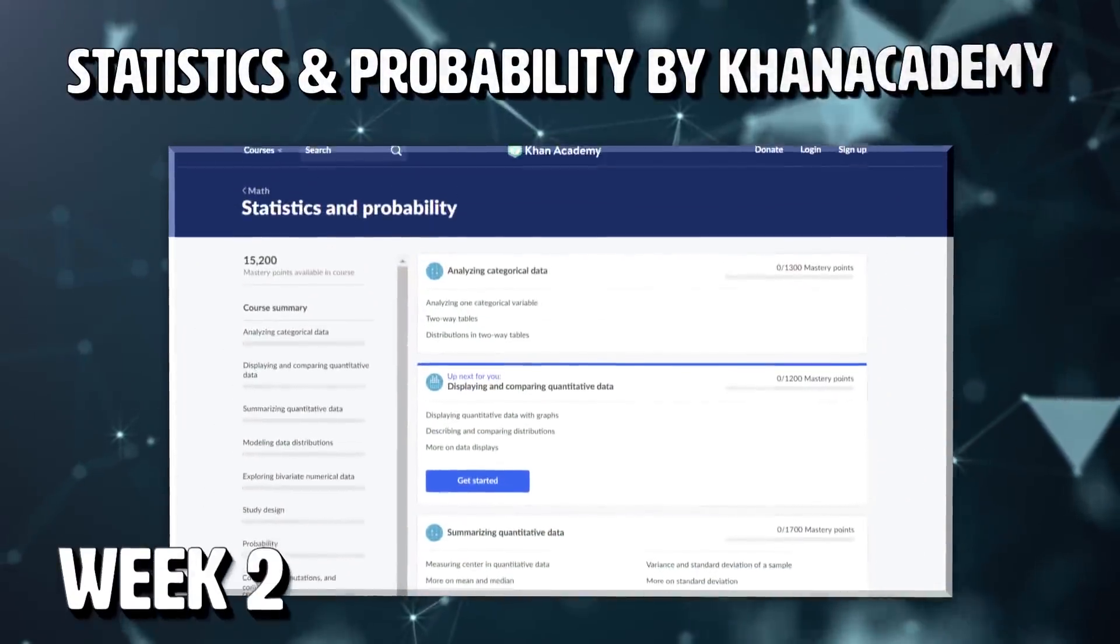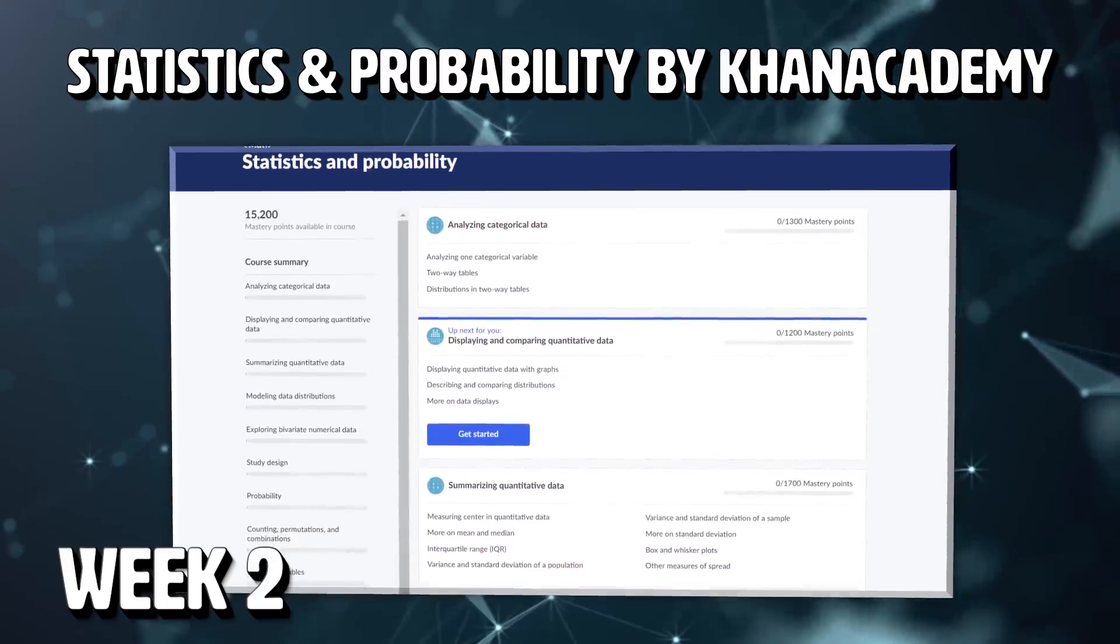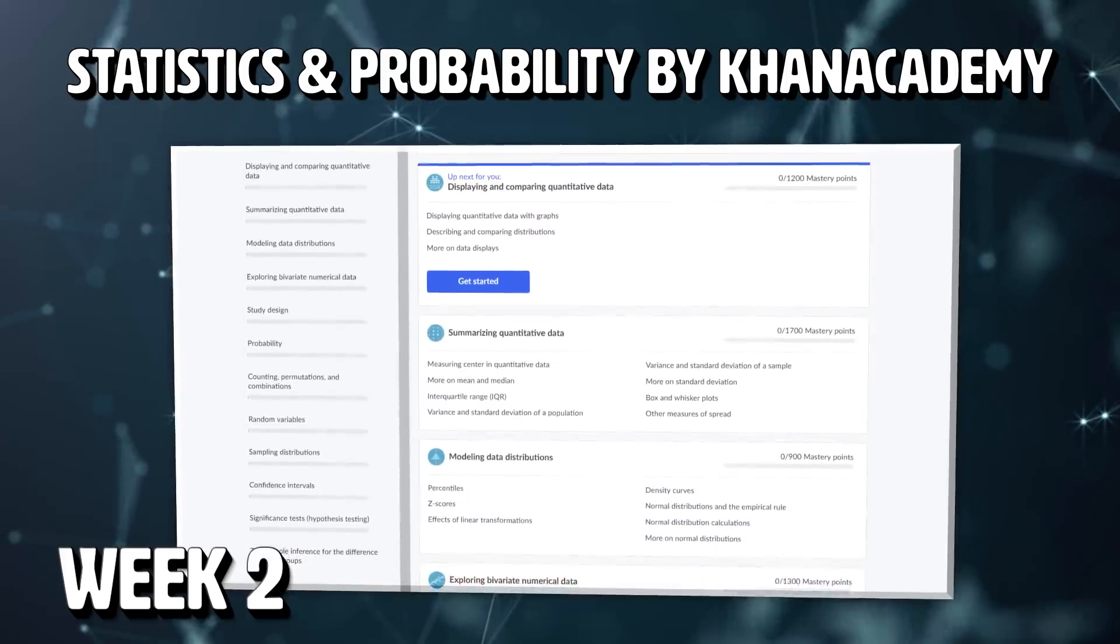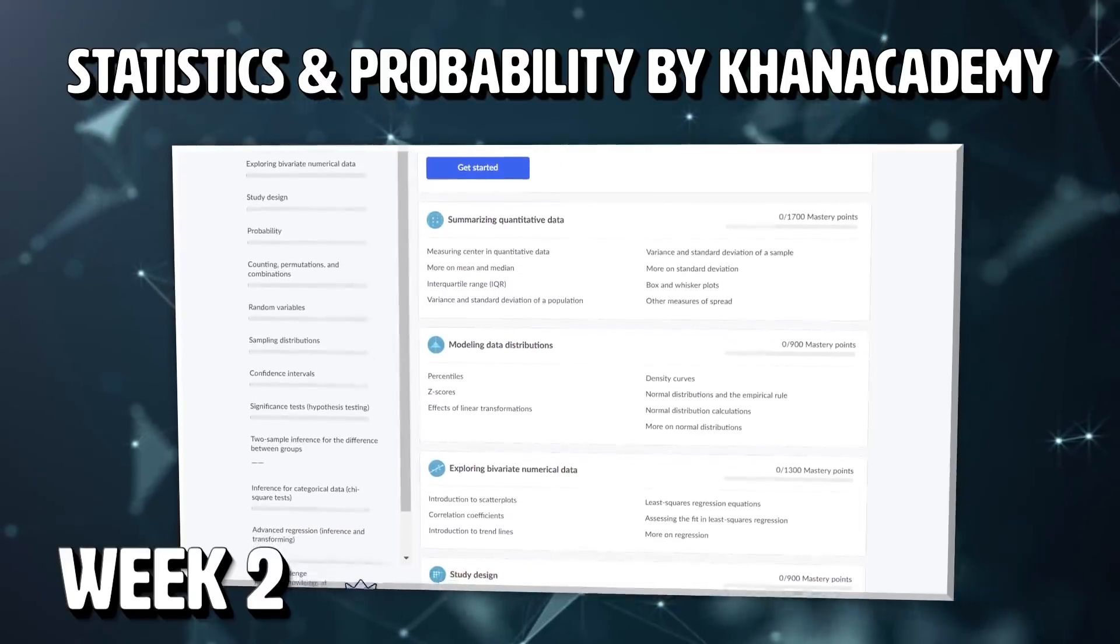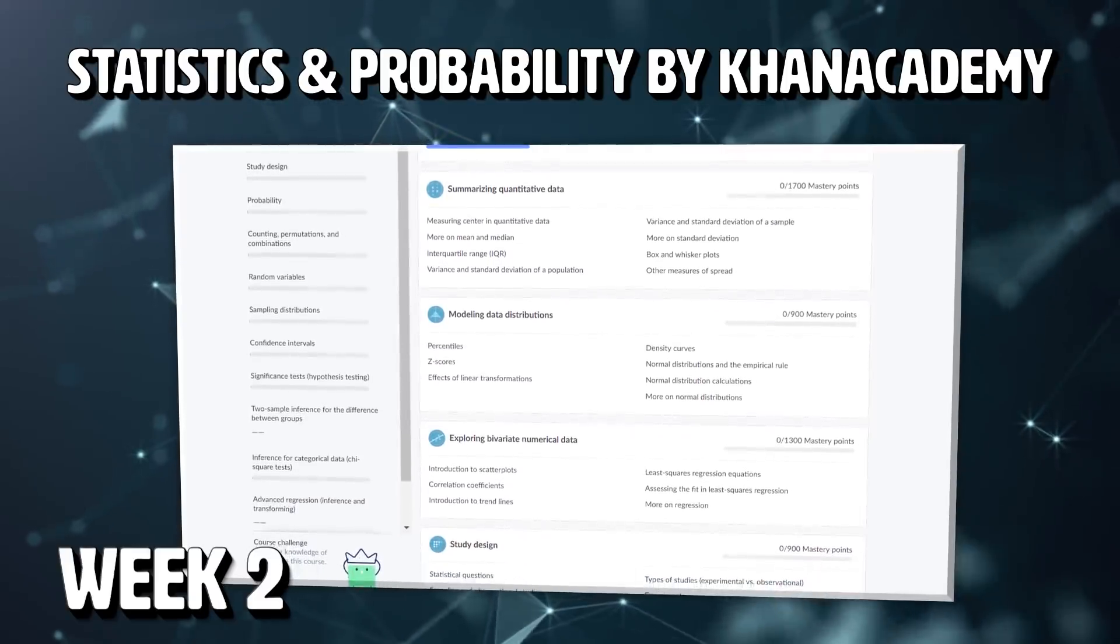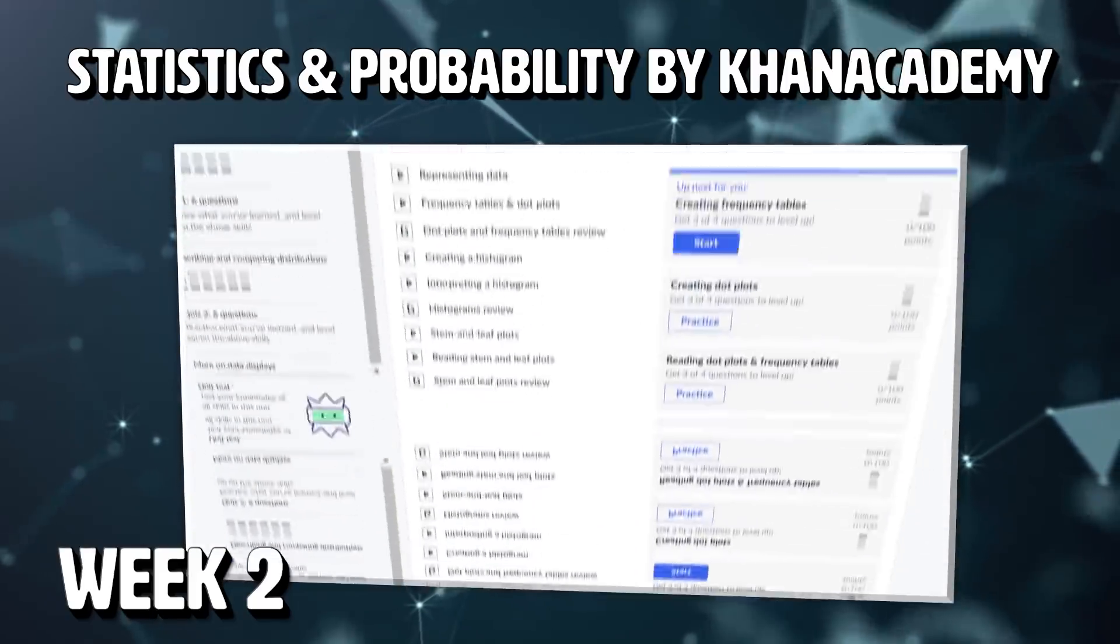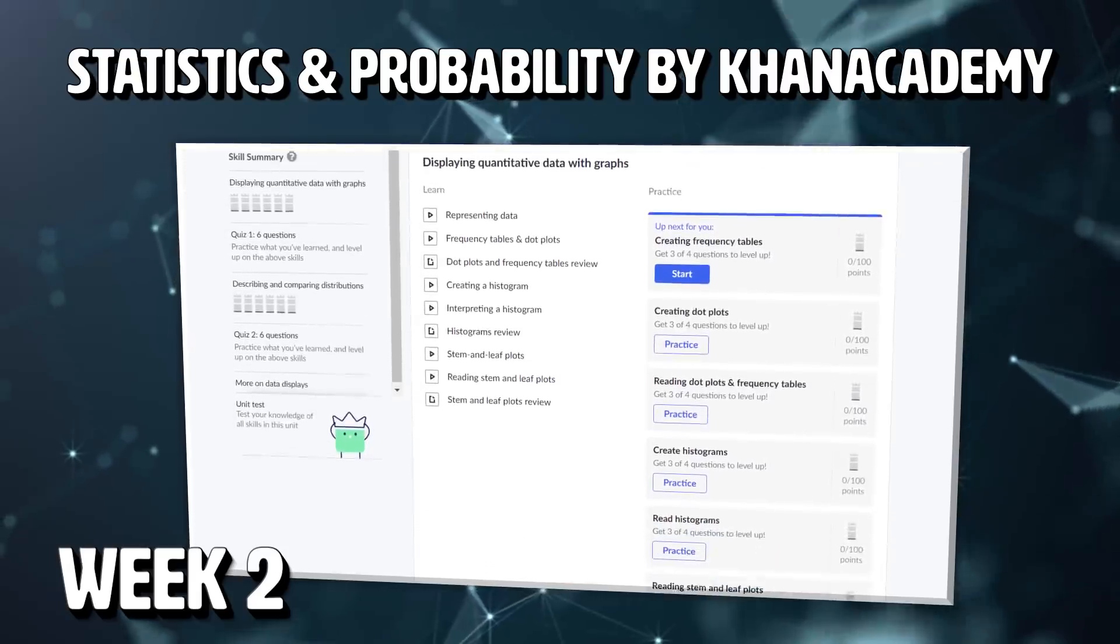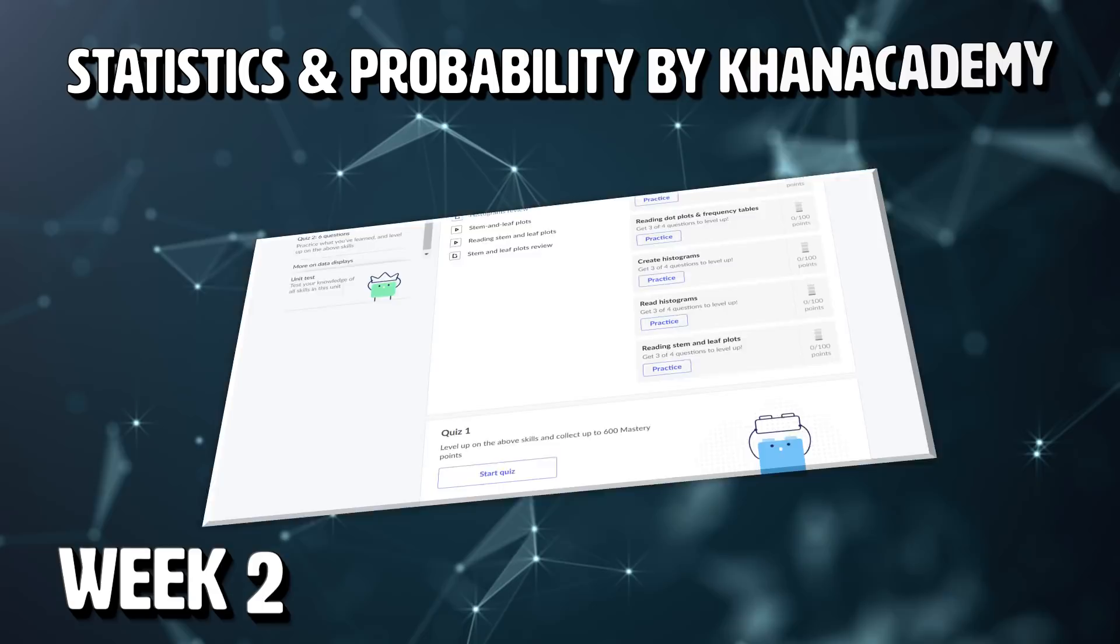Once we have a basic grasp of Python, in the second week, we'll want to take the Statistics and Probability course at Khan Academy. It's actually really fun. Khan Academy's website has gotten better every year. The course has interactive content, and they make it feel like you're playing a game due to the mastery point system. It covers topics like probability distributions, random variables, and hypothesis testing, all of which are supremely useful in the data science pipeline.